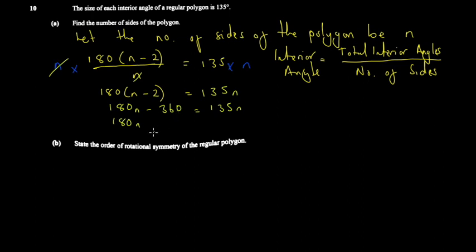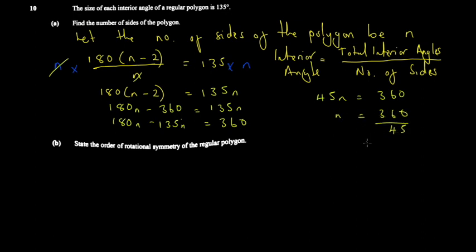So n equals 360 divided by 45. Working that out: 360 divided by 45 equals 8. So the polygon has 8 sides. You can confirm this by putting 8 back into the formula — 180 times (8 minus 2) divided by 8 — and checking that you get 135 degrees. So the answer is 8.